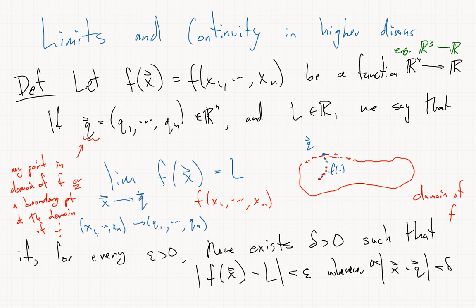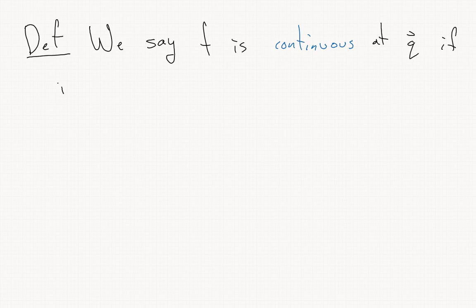Now let me talk about continuity. We say that f is continuous at the point q if q is in the domain of f and the limit as x goes to q of f(x) exists and